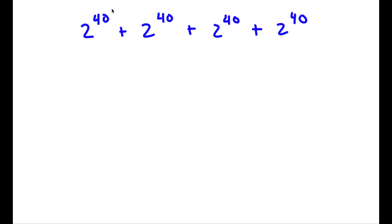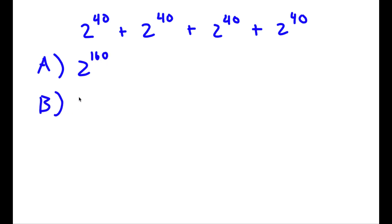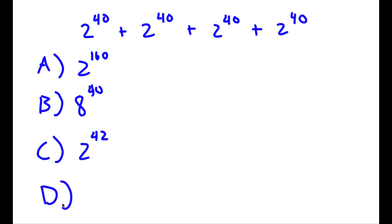Alright, so I have 2 to the power of 40 plus 2 to the power of 40 plus 2 to the power of 40 plus 2 to the power of 40. And I have four answer choices: A is 2 to the power of 160, B is 8 to the power of 40, C is 2 to the power of 42, and D is 2 to the power of 21.